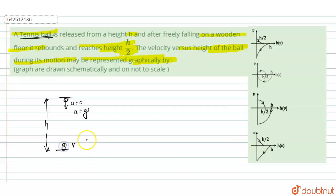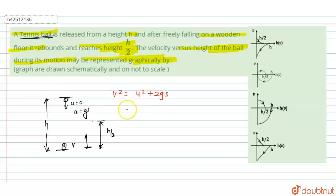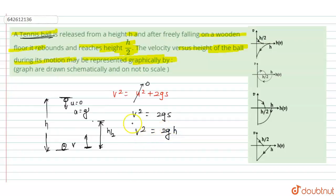After striking the ground, the ball rebounds and reaches height h/2. Using the kinematic equation v² = u² + 2gs, since initial velocity u = 0 and height is h, we get v² = 2gh. This is the first condition.